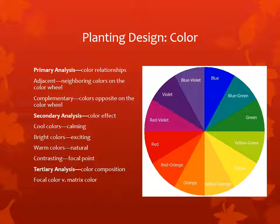You can also create strong focal points by using contrasting colors. Finally, there is the tertiary analysis, or color composition. This is where you have a focal color — a color that stands out in the landscape — and you have a matrix color, which is often green. The matrix color can also be another foliar color like blue, tans, or white.